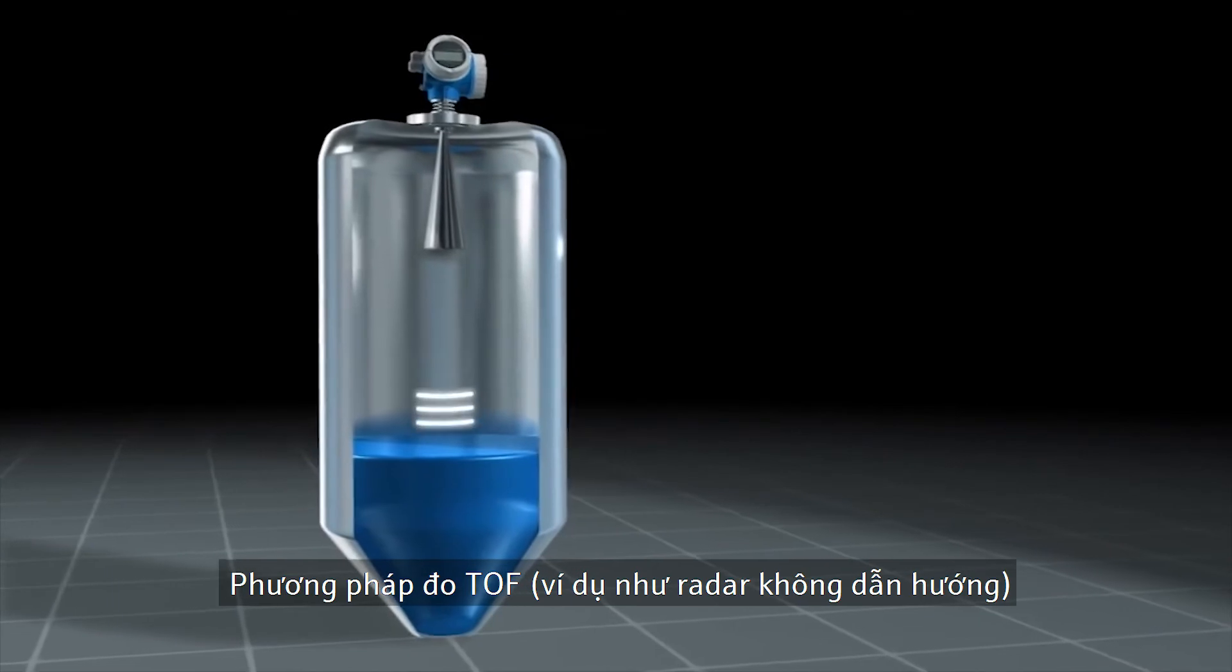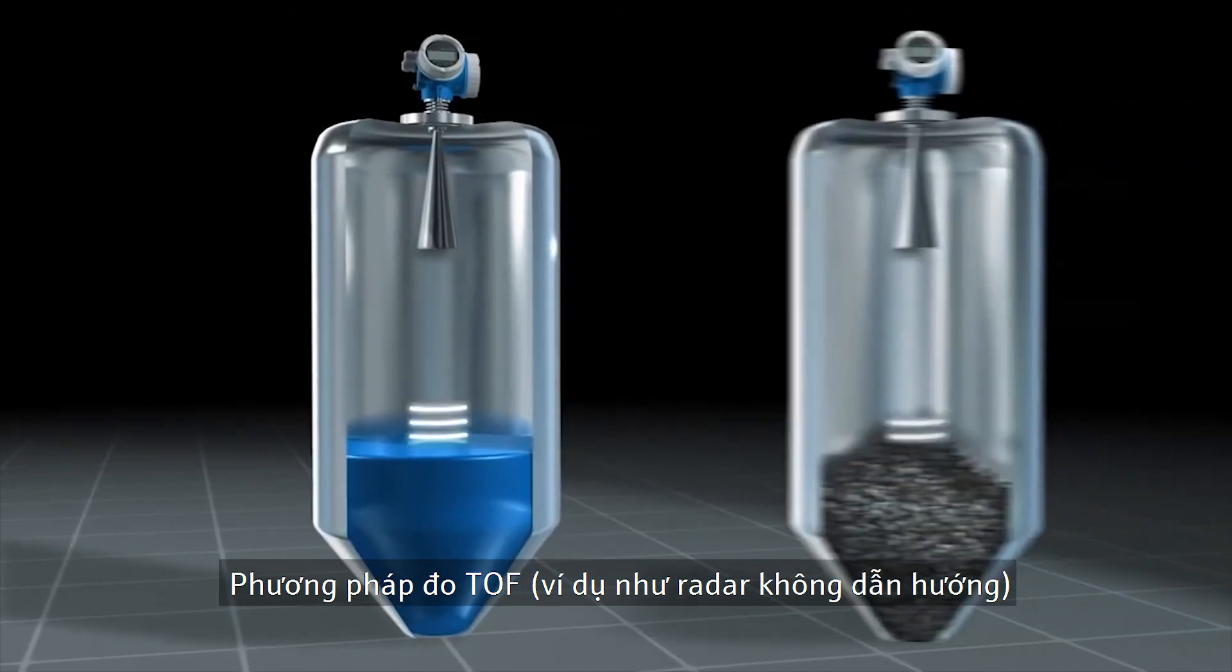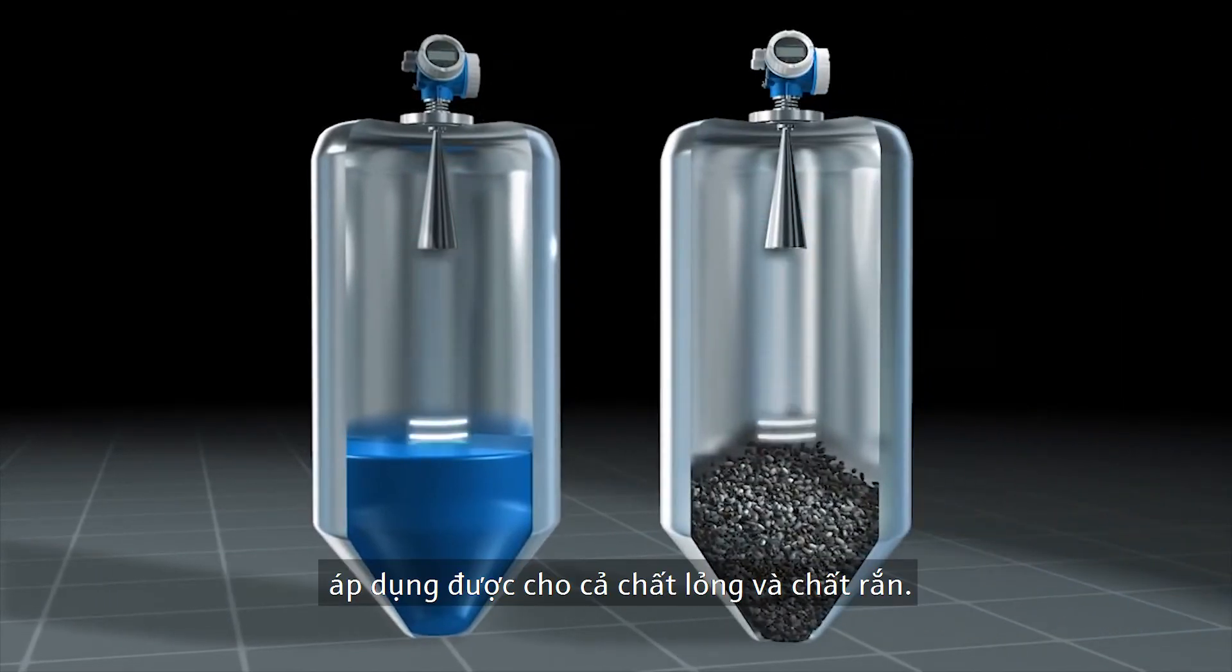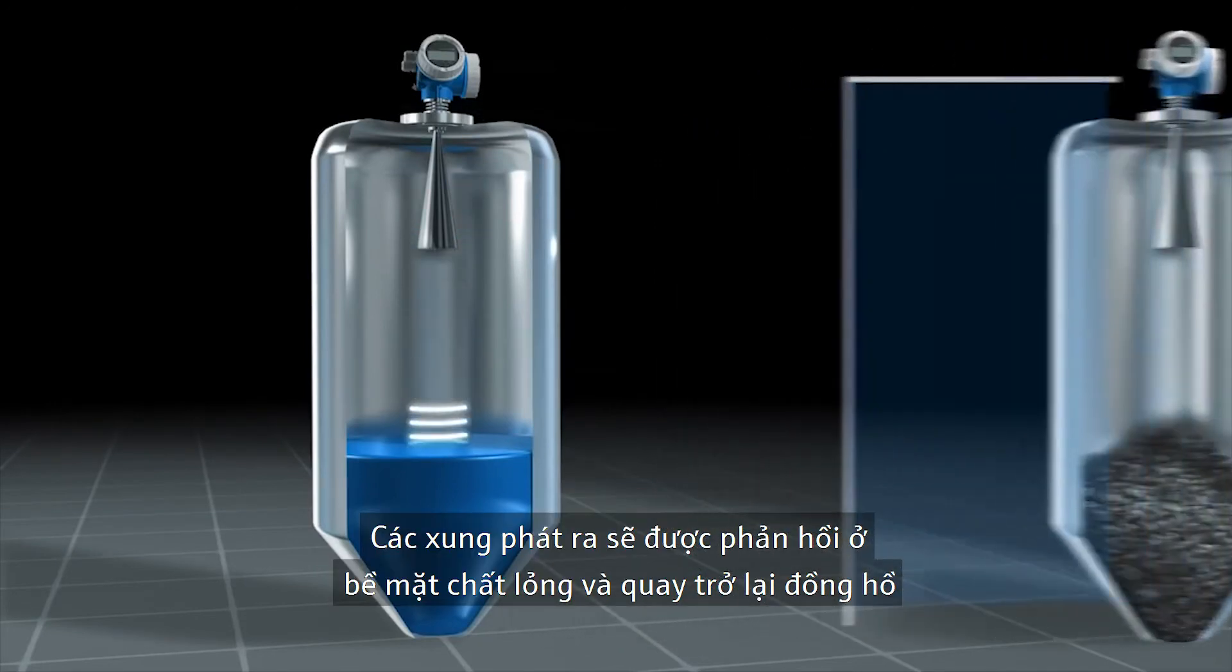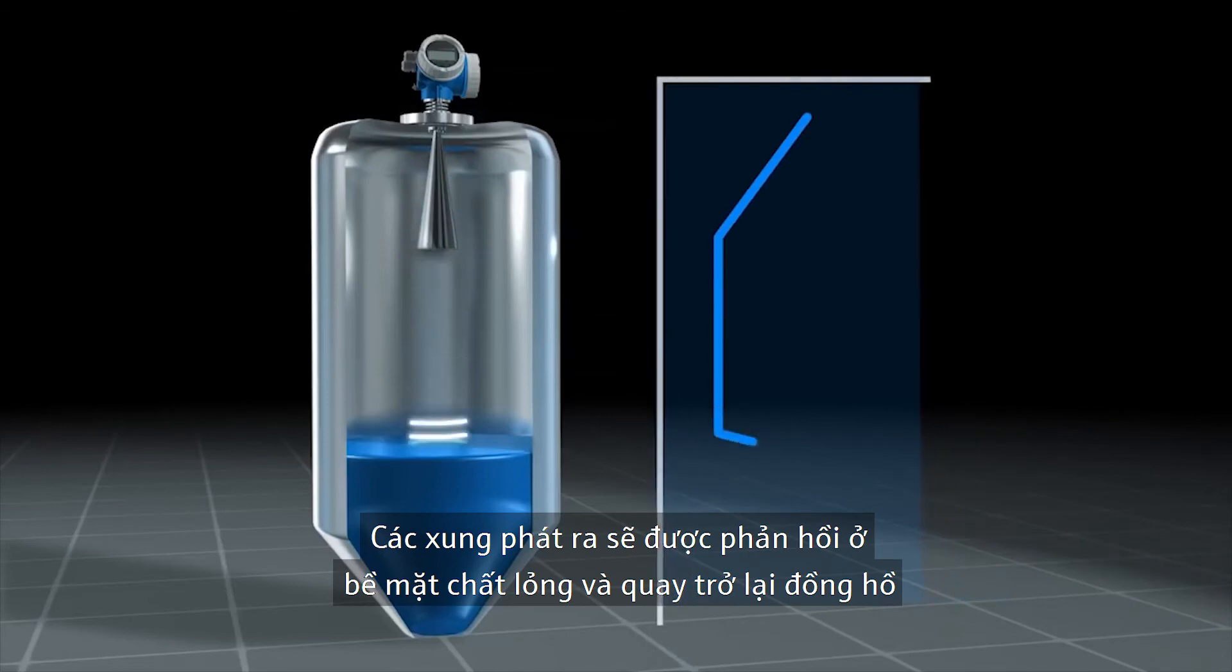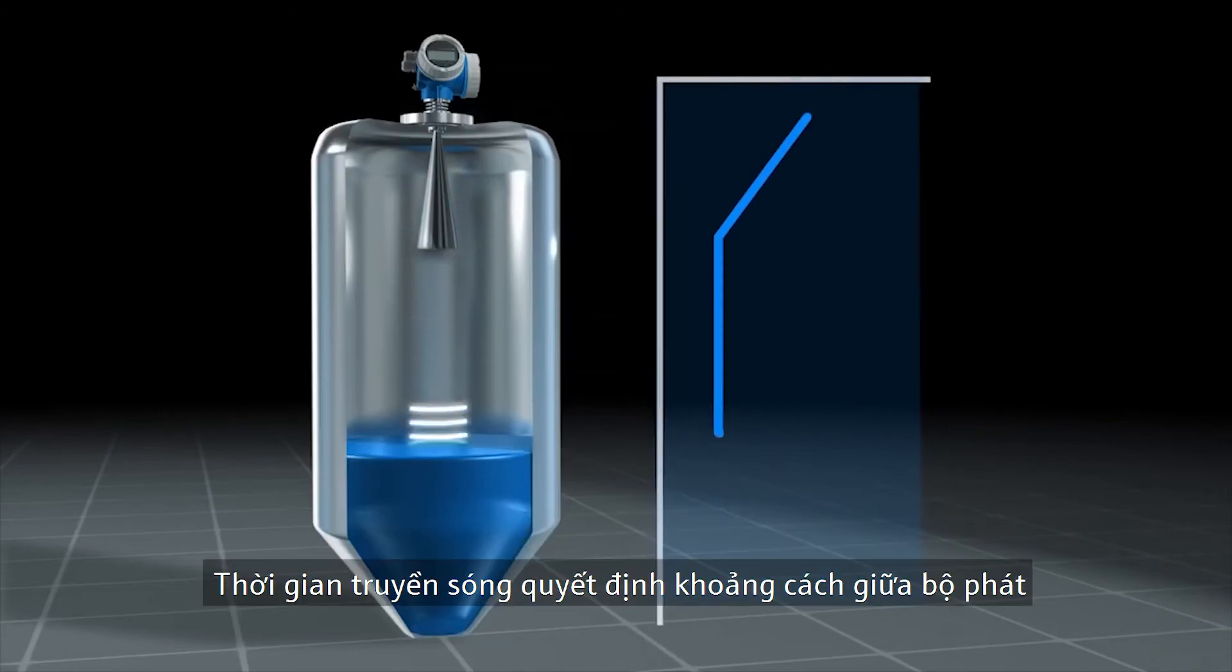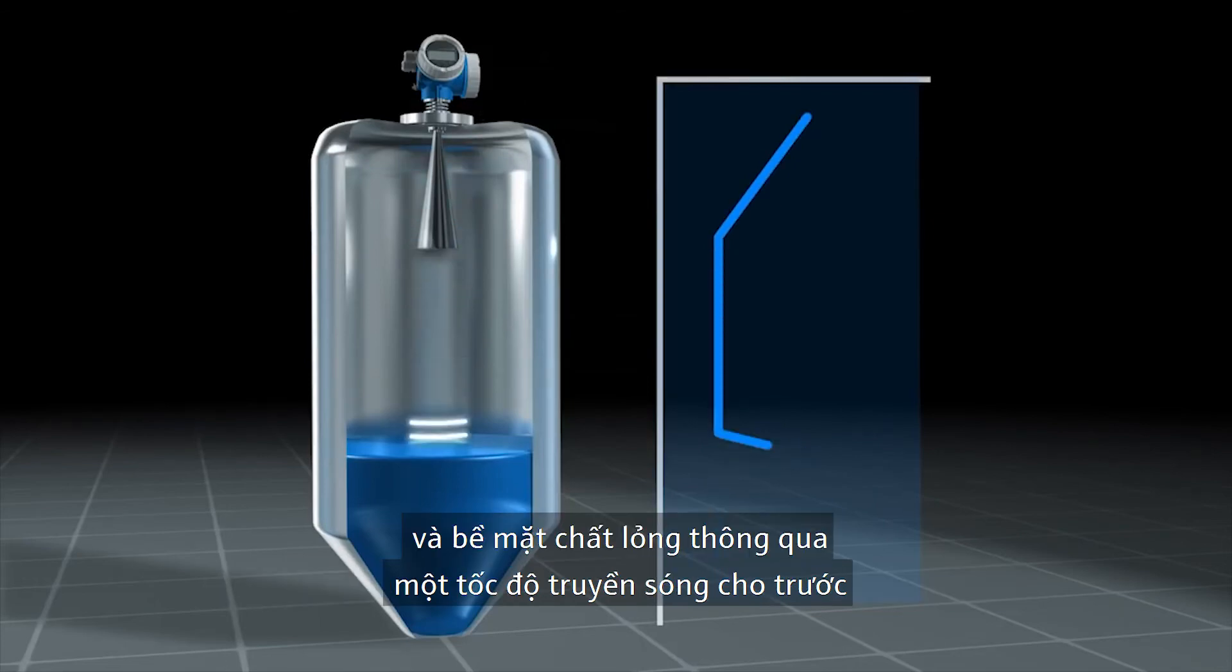The time of flight measurement demonstrated here by the example of free emitted radar pulses works both in liquids and solids. The emitted pulses are reflected from the medium surface and detected by the instrument. The time of flight of the pulse determines the distance between the transmitter and the surface using the known propagation speed.